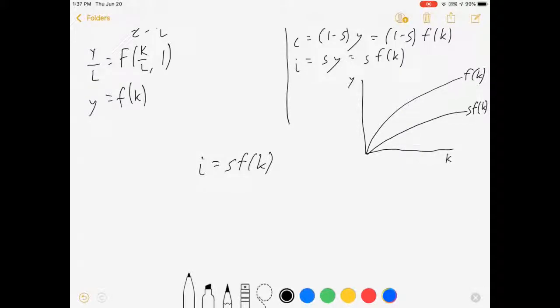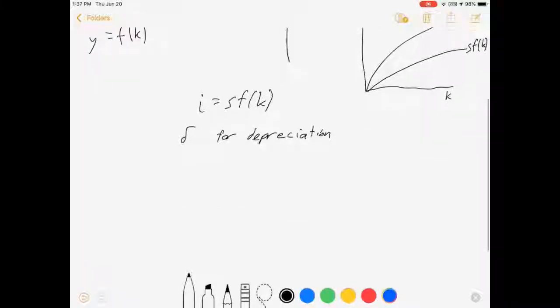Now, granted, capital doesn't last forever so we need to account for the fact that it wears out. We're going to introduce an idea called depreciation and we're going to measure it with this delta. Delta for depreciation. It's a rate at which our capital stock breaks down.